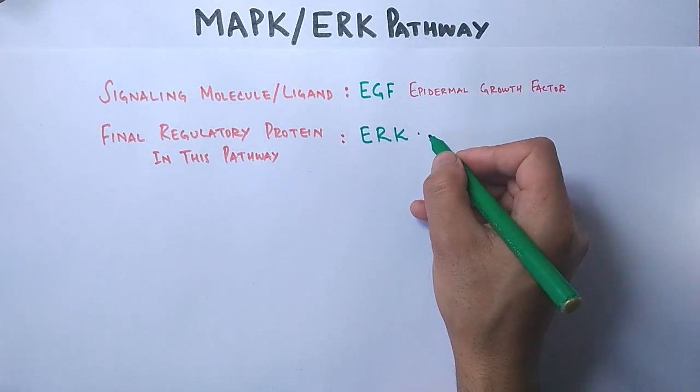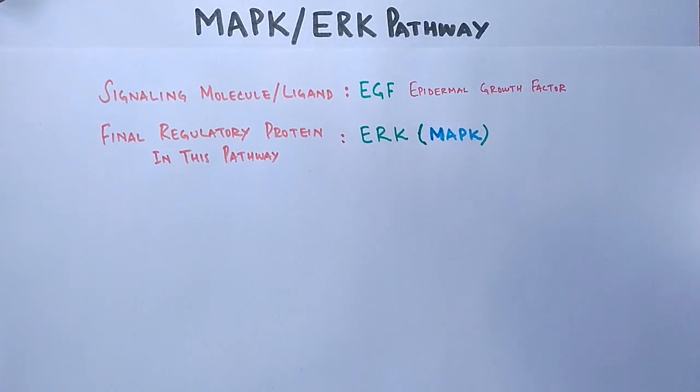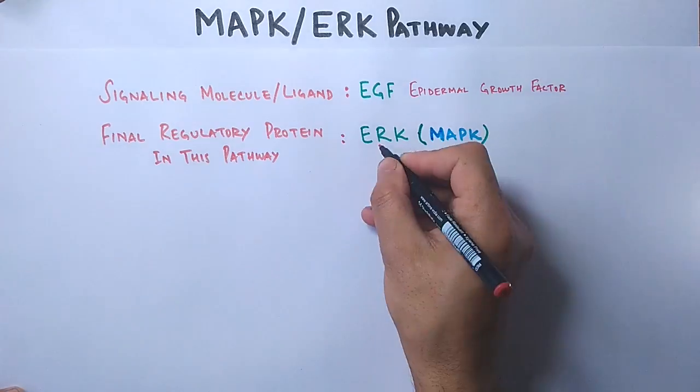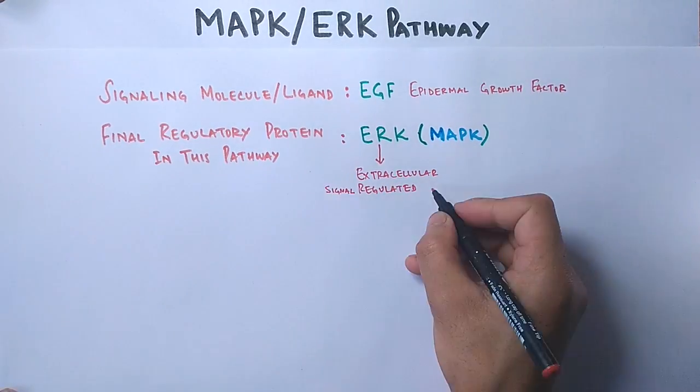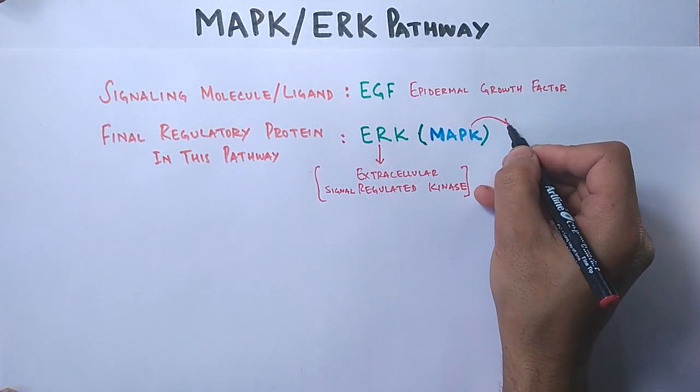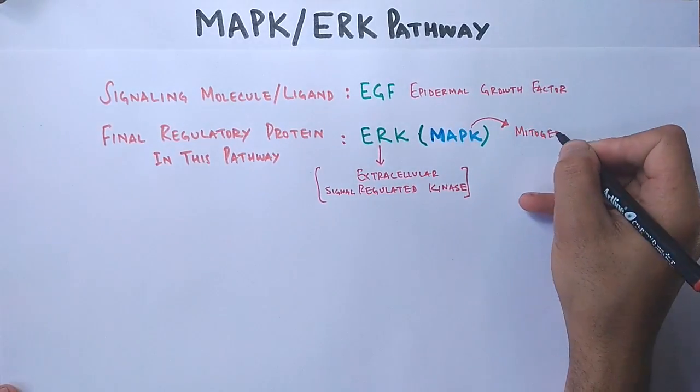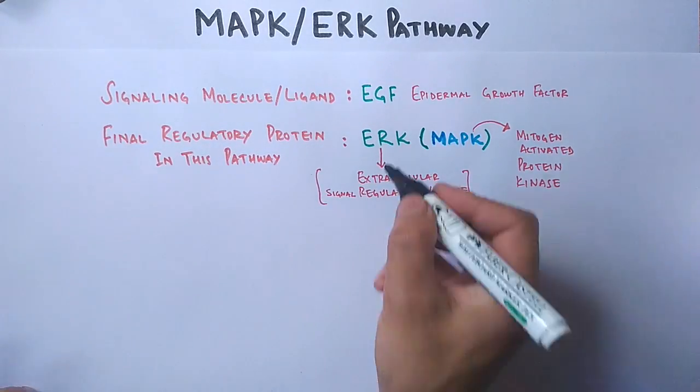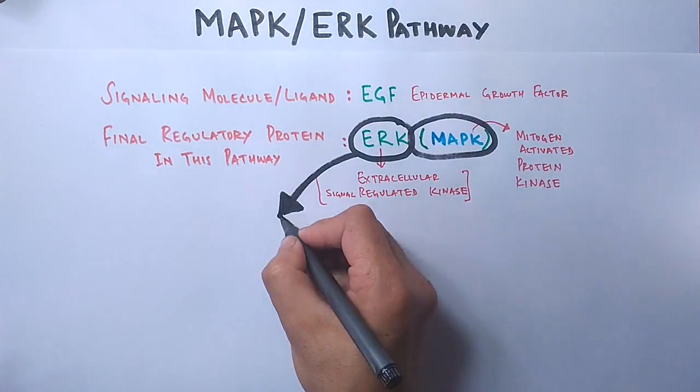The final regulatory protein in this pathway is ERK, or you can say MAPK, from which this pathway gets its name. The ERK stands for extracellular signal regulated kinase, and MAPK is an acronym for mitogen activated protein kinase.